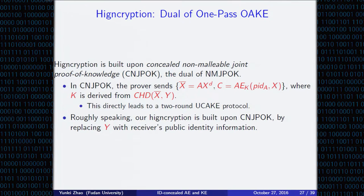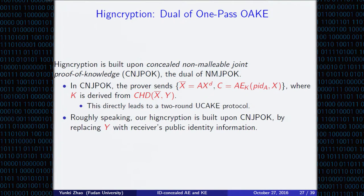HICE is actually the dual of one-pass OEKE, built on a mechanism referred to as concealed non-malleable joint proof of knowledge, CNJPOK — the dual of NMJPOK. In CNJPOK, given the random challenge big Y, the prover computes bar-big-X equals big A times big X to the power of D. And C is the ciphertext of authenticated encryption of the prover's identity and its actual ephemeral component big X, with a key derived from big X and bar-big-X. Note that bar-big-X does not reveal the prover's identity because his public key big A is covered by big X to the power of D, and C also does not reveal identity.